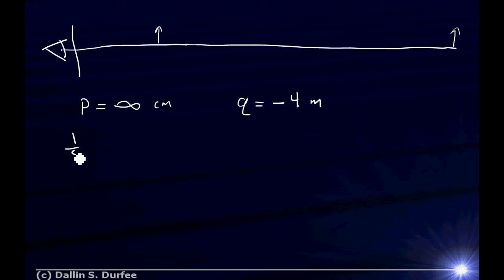And then we say one over F is equal to one over P plus one over Q, which means one over P is one over infinity, which is zero, plus one over Q. That's going to be one over minus four meters. Focal length is negative four meters. There's the focal length of glasses that you need to correct your vision and make your life better. That's it. It should be easy homework, right? Bye.